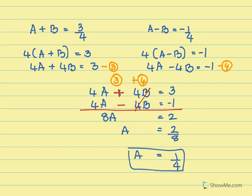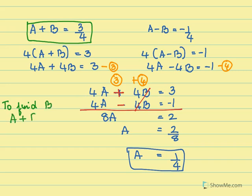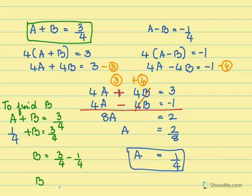Now I have found a. To find b, I put the value of a into equation 1: a plus b equals 3 by 4. Substituting a equals 1 by 4 gives 1 by 4 plus b equals 3 by 4. So b equals 3 by 4 minus 1 by 4, which gives b equals 2 by 4, and b equals 1 by 2.